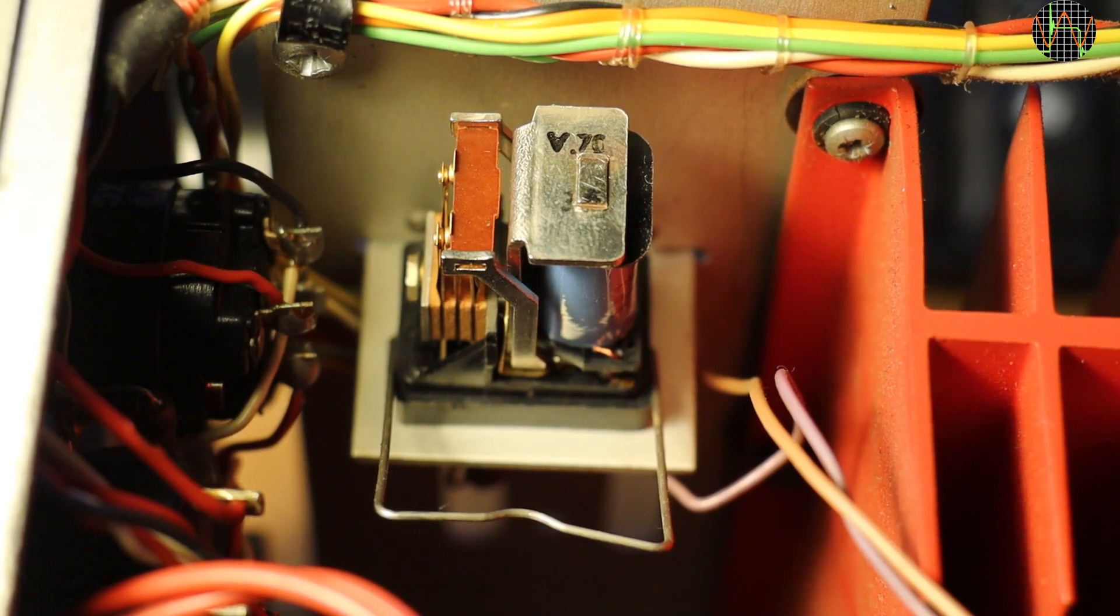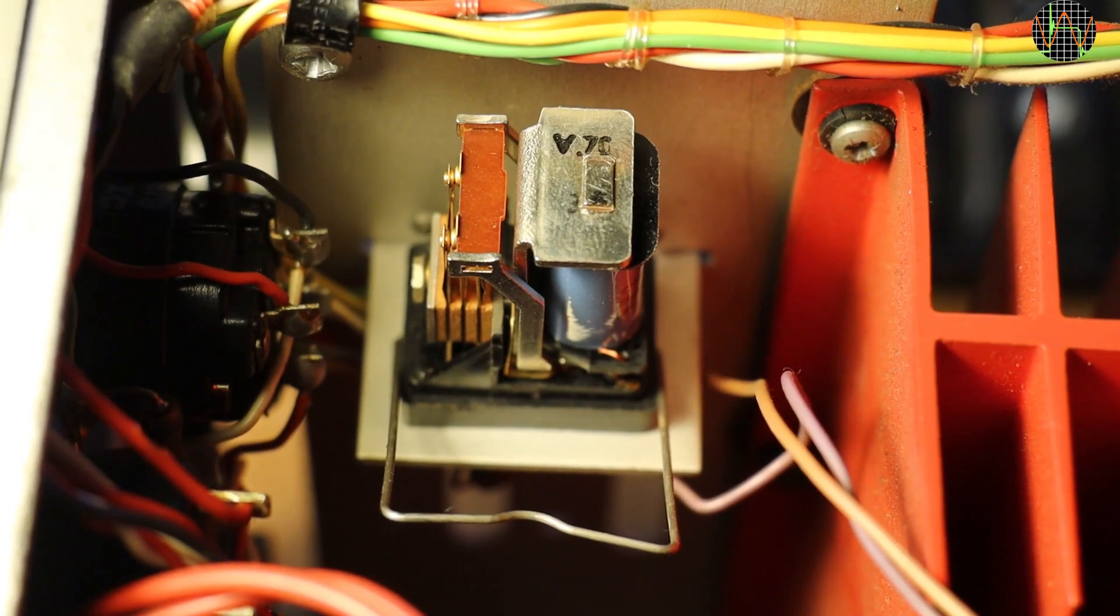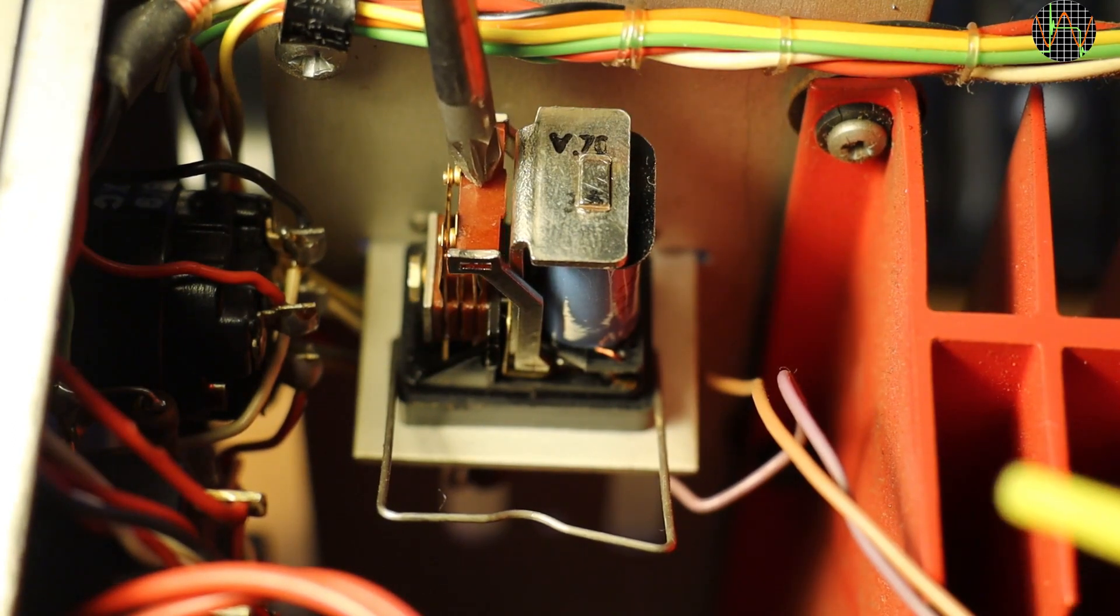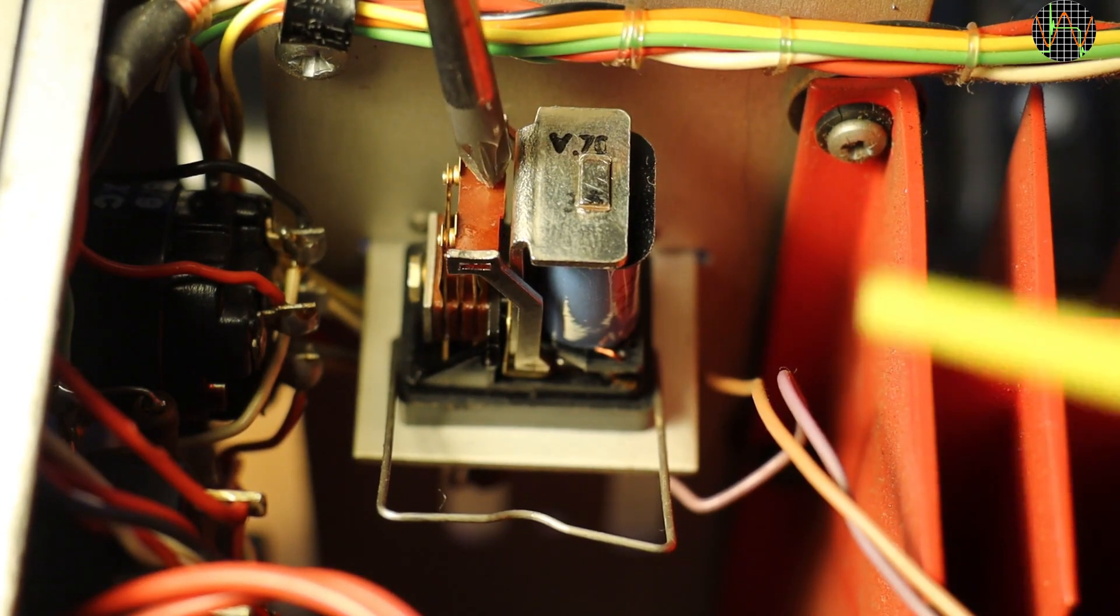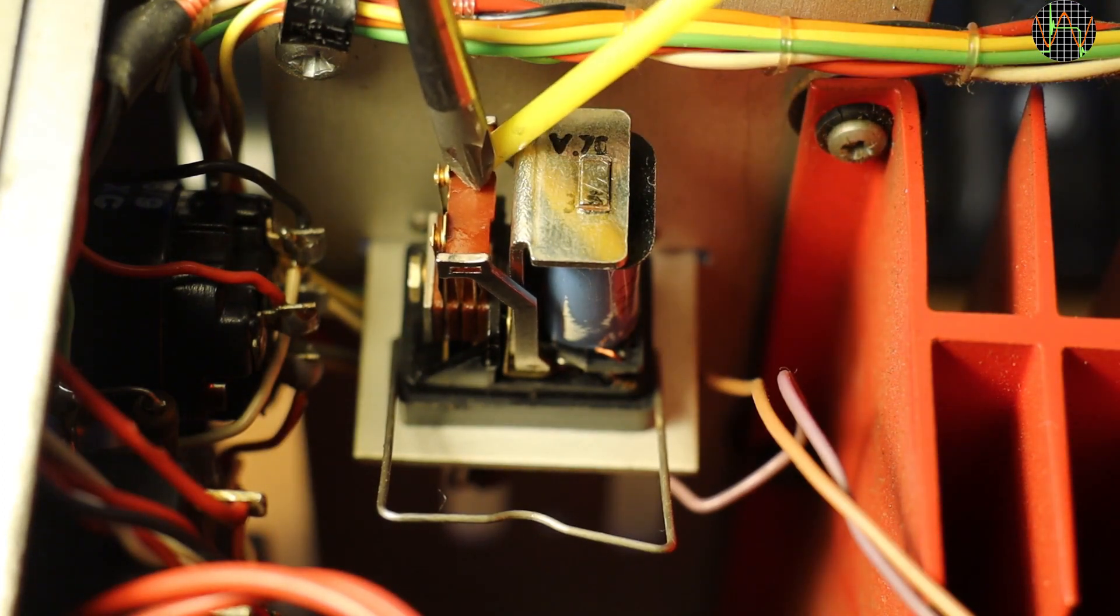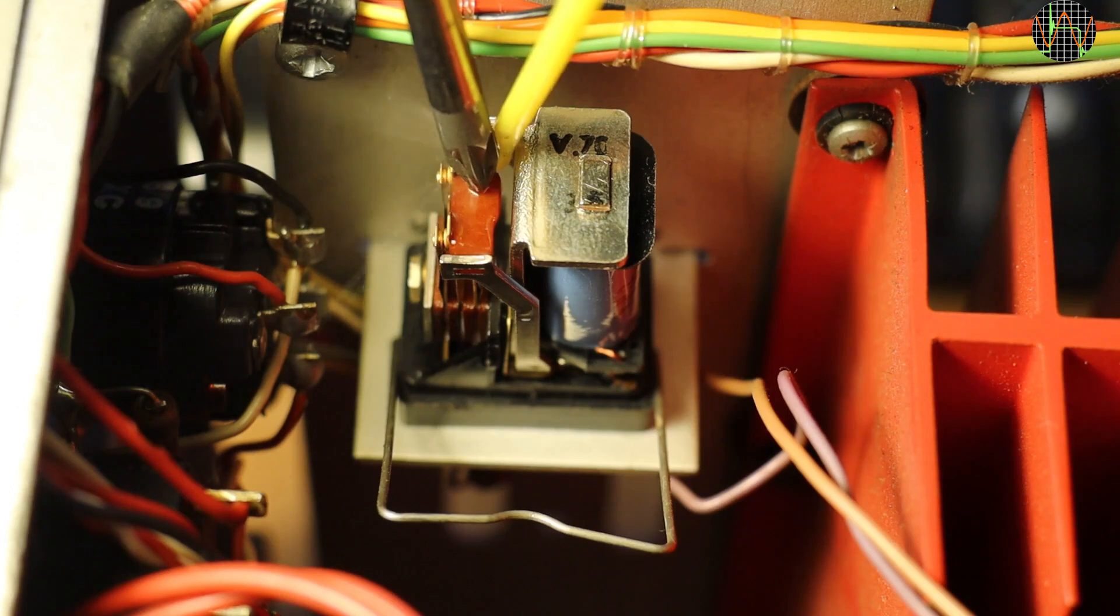The contacts that drive the lights on the front panel do stick sometimes with the effect that both constant current and constant voltage lights are on. It does not hamper operation and I tried cleaning with contact cleaner but the sticky contact is under the horizontal bar and hard to reach. The cleaner helped somewhat but I may have to take the relay out to clean it properly.